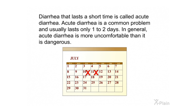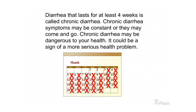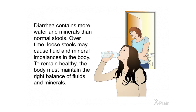Diarrhea that lasts a short time is called acute diarrhea. Acute diarrhea is a common problem and usually lasts only one to two days; in general, it is more uncomfortable than it is dangerous. Diarrhea that lasts for at least four weeks is called chronic diarrhea. Chronic diarrhea symptoms may be constant or may come and go, and it may be dangerous as it could signal a more serious health problem. Diarrhea contains more water and minerals than normal stools, and over time loose stools may cause fluid and mineral imbalances in the body.